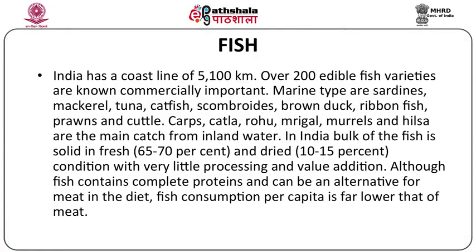Now let us look into the details of how fish is classified and what it is composed of, and therefore the nutritive value of fish. India, as we all know, has a very vast coastline of 5,100 kilometers, and as a result we can have almost 200 different edible varieties of fish of importance. The marine type — that is what's found in the sea — includes sardines, mackerel, tuna, catfish, scombroids, ribbon fish, prawns and cuttlefish. Rohu, Mrigal, Murils and Hilsa are the catch from inland water.